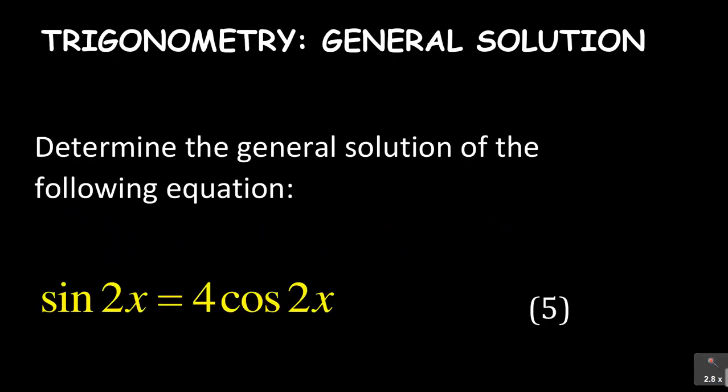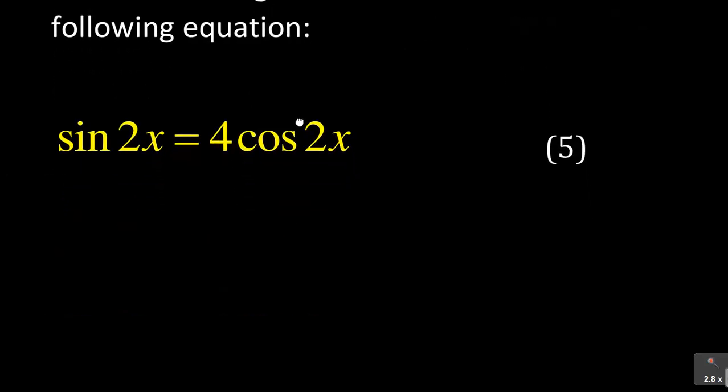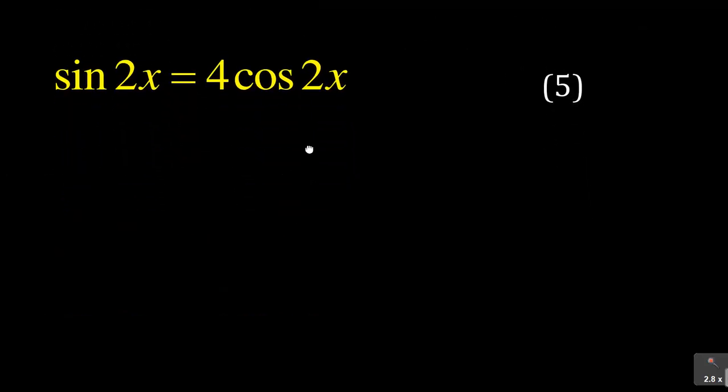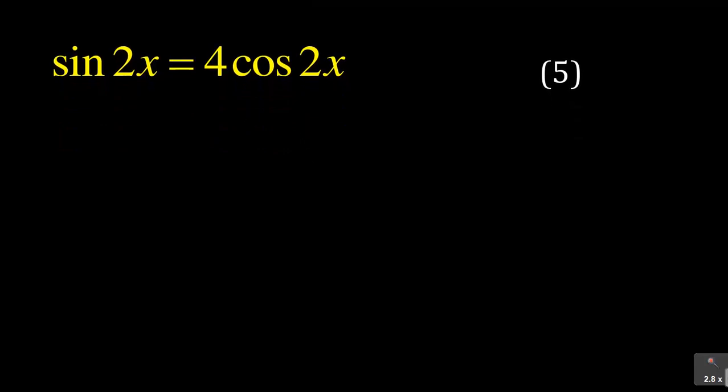Now, let us look at one more question which says determine the general solution of the following equation. And they have given us, it's five marks, to say sin 2x is equal to 4 cos 2x.